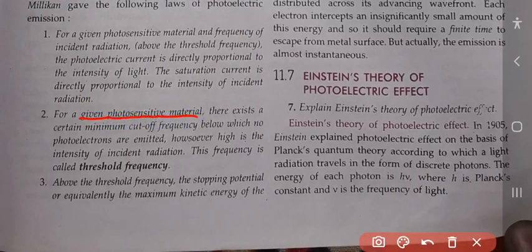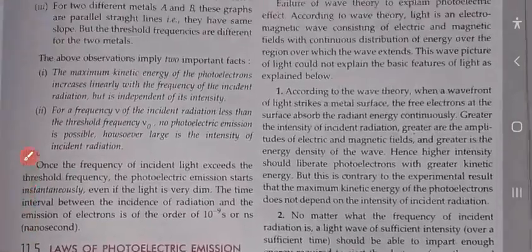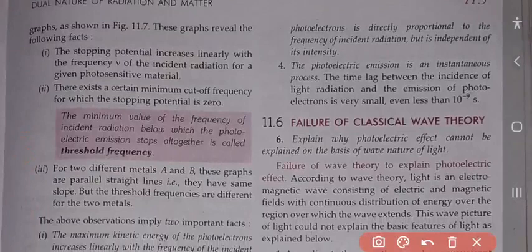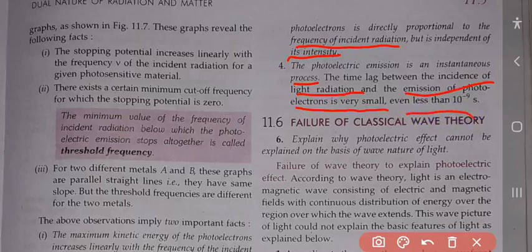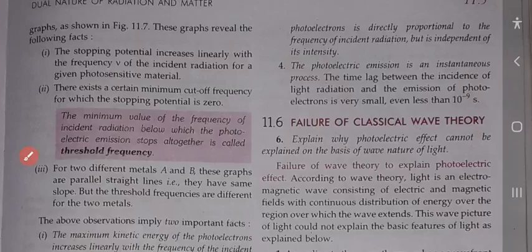Second law: For a given photosensitive material, there exists a certain minimum cutoff frequency below which no photoelectrons are emitted — threshold frequency. Above the threshold frequency, the stopping potential and equivalently the maximum kinetic energy of photoelectrons is directly proportional to the frequency of incident radiation but is independent of intensity. Third law: Photoelectric emission is an instantaneous process — time lag is less than 10⁻⁹ seconds.